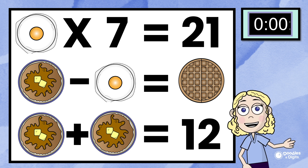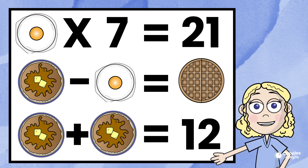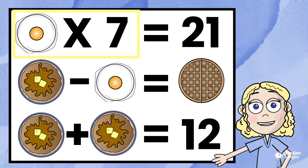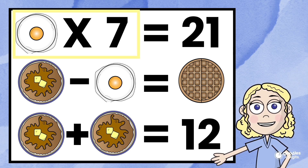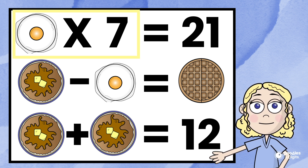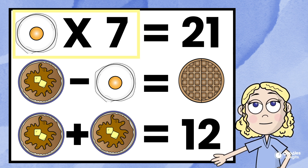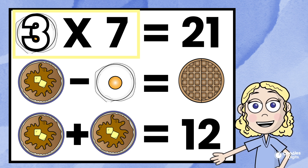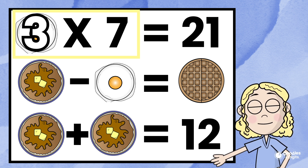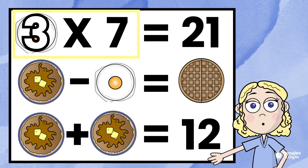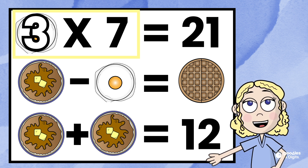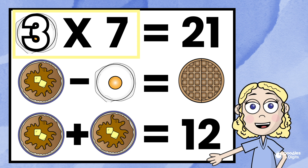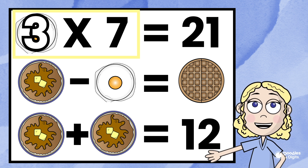All right, how'd you do? I started up here at egg times seven. What times seven equals 21? Three times seven equals 21. So the egg represents three.